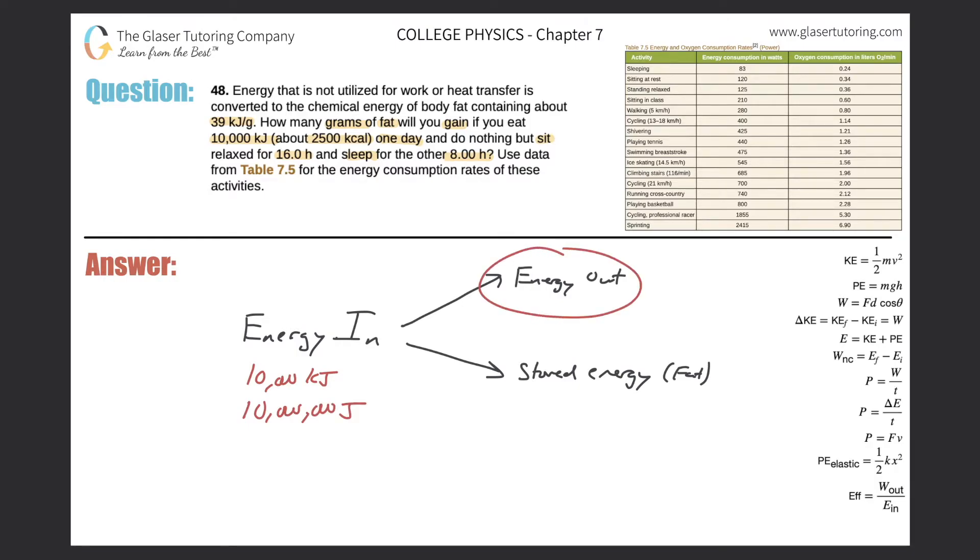Now how do we find out how much energy we are producing? Well, what are we doing during this particular day? We are sitting on our behind for 16 hours and we are then sleeping for eight hours. So if we use the table over here on the right, we have to find how much energy we are consuming per time, meaning the watts, the power for sleeping. In here, sleeping has a value of 83 watts. And then sitting at rest, it says right here is 120 watts.